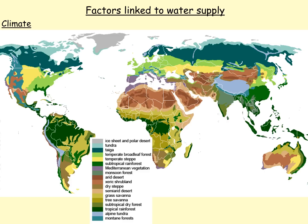Climate also affects biomes. The amount of rainfall has a direct impact on the type of vegetation that can be grown, and therefore the biome. Regions with significant rainfall throughout the year are going to be much more tropical — tropical rainforest. You might get subtropical dry forest around the edges where there's a little less rain. Generally, increased precipitation leads to increased trophic levels, which you'll explore further in biodiversity.